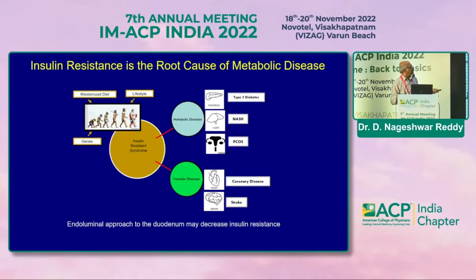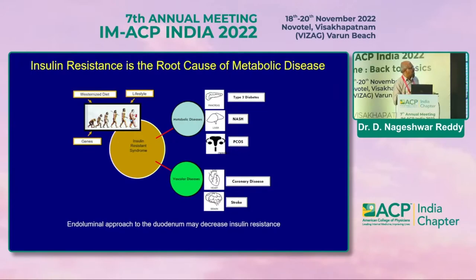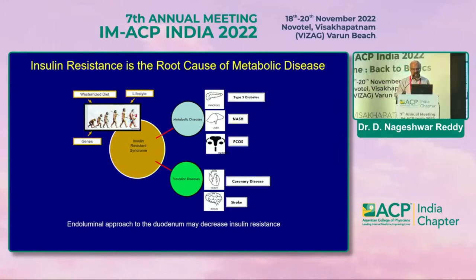It's primarily the westernized diet and lifestyle — of course there is a genetic background. We know that the Indian population has certain genes which make it more prone to this. Then you get the insulin resistance syndrome. In fact, the name of metabolic syndrome should be changed to insulin resistance syndrome. The consequences include type 2 diabetes, NASH, PCOS, and so many other diseases. This is the central mechanism.